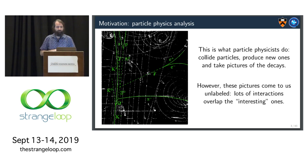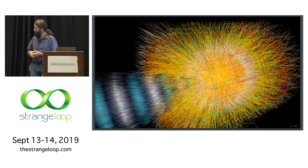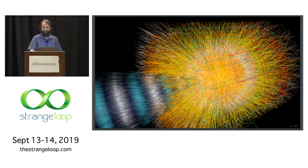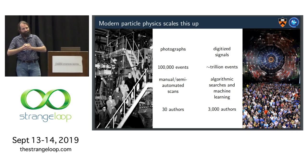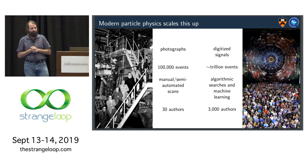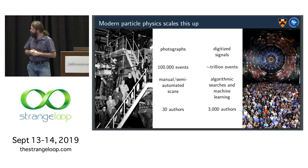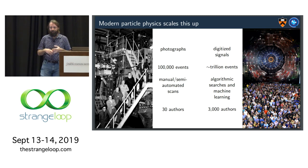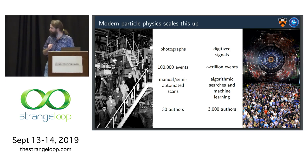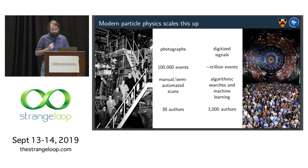So just in a nutshell, this is what particle physicists do. Even today, this is what we do. We collide particles, produce new ones, and take pictures of their decays so that we can interpret them as what have we produced. And unfortunately, these pictures come unlabeled. So here's a modern one. You look at that and you say, oh, yeah, I see something, maybe. So since the old days, things have basically just scaled up. It's the same kind of problem, but going from photographs to digital scans, the number of events is now at the trillion level. Obviously, we're no longer manual or semi-automated. It's fully automatic. Even machine learning is involved in that.